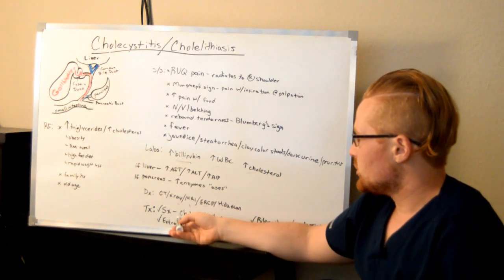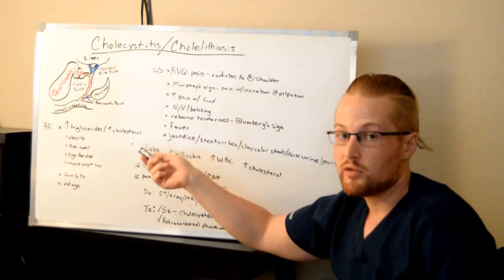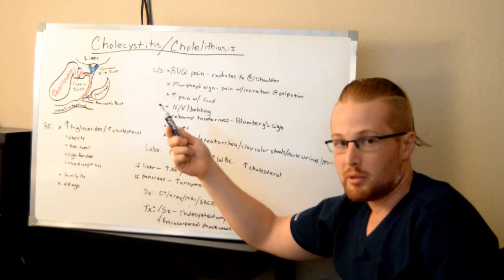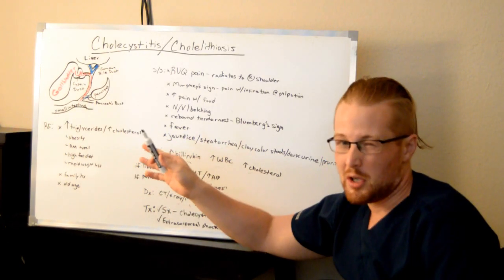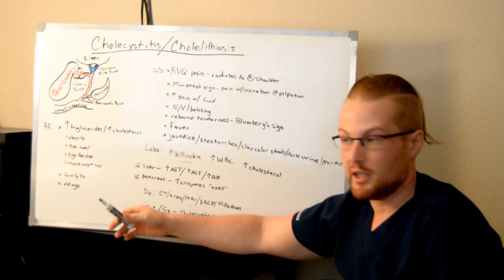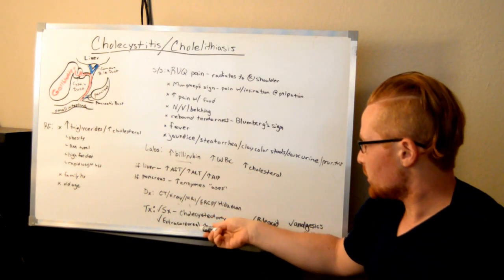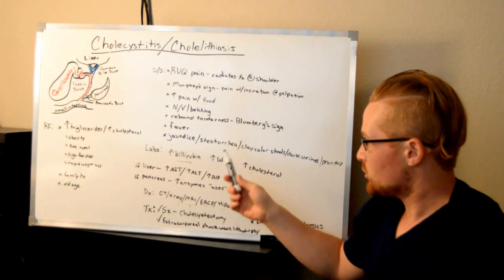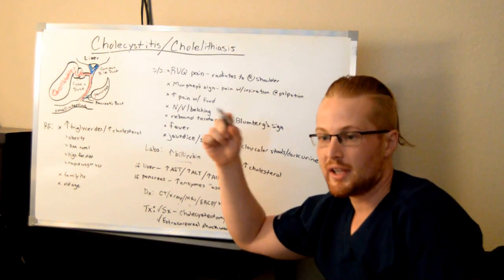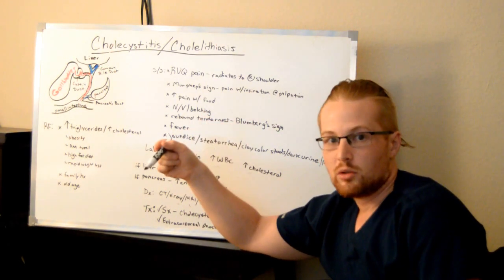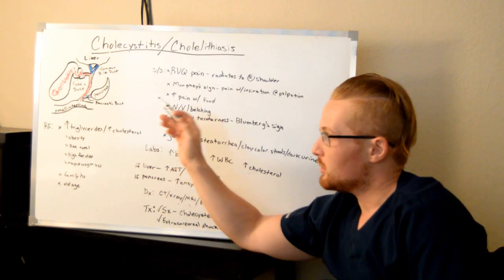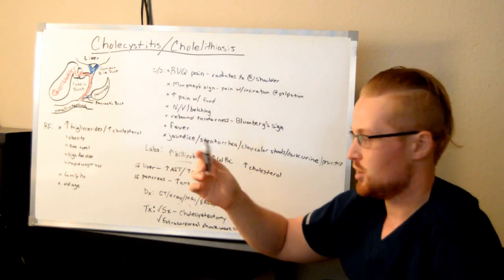Treatment: you can see a cholecystectomy, which is to remove the gallbladder. This is typically done laparoscopically. It's not really a big deal. They usually discharge within a day. Or they can do an extracorporeal shockwave lithotripsy. What this is, is just like how they can take out kidney stones with shockwave therapy, they might be able to break it up, depending on what the physician believes.